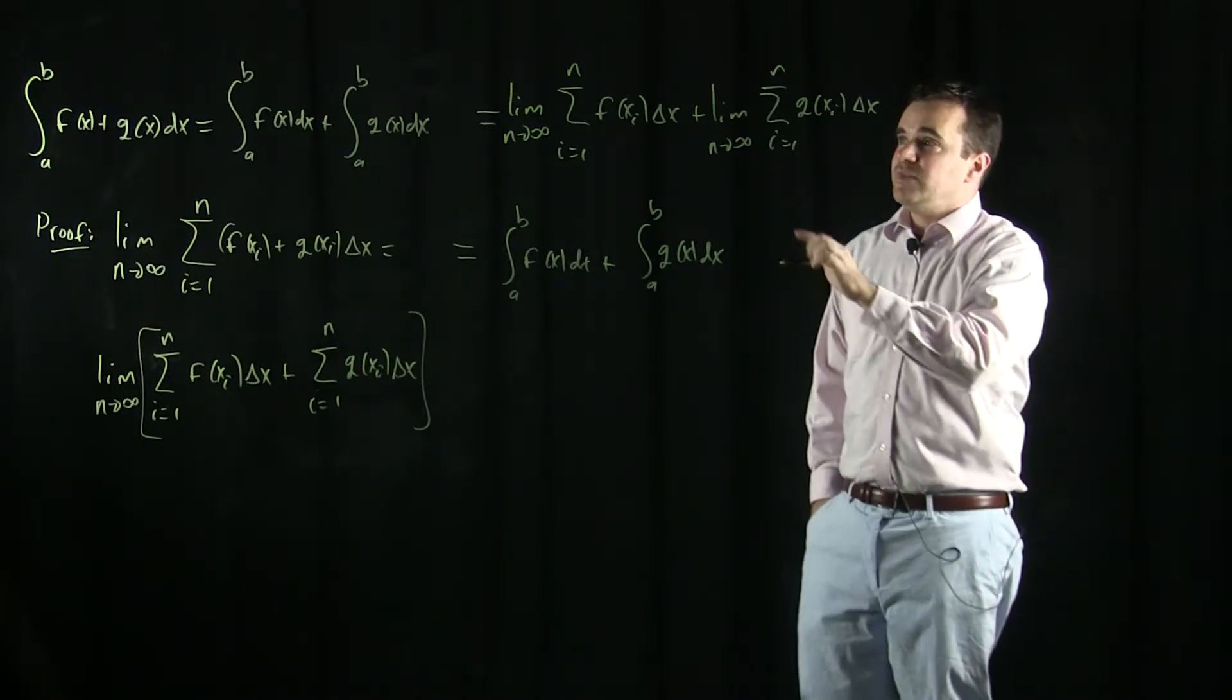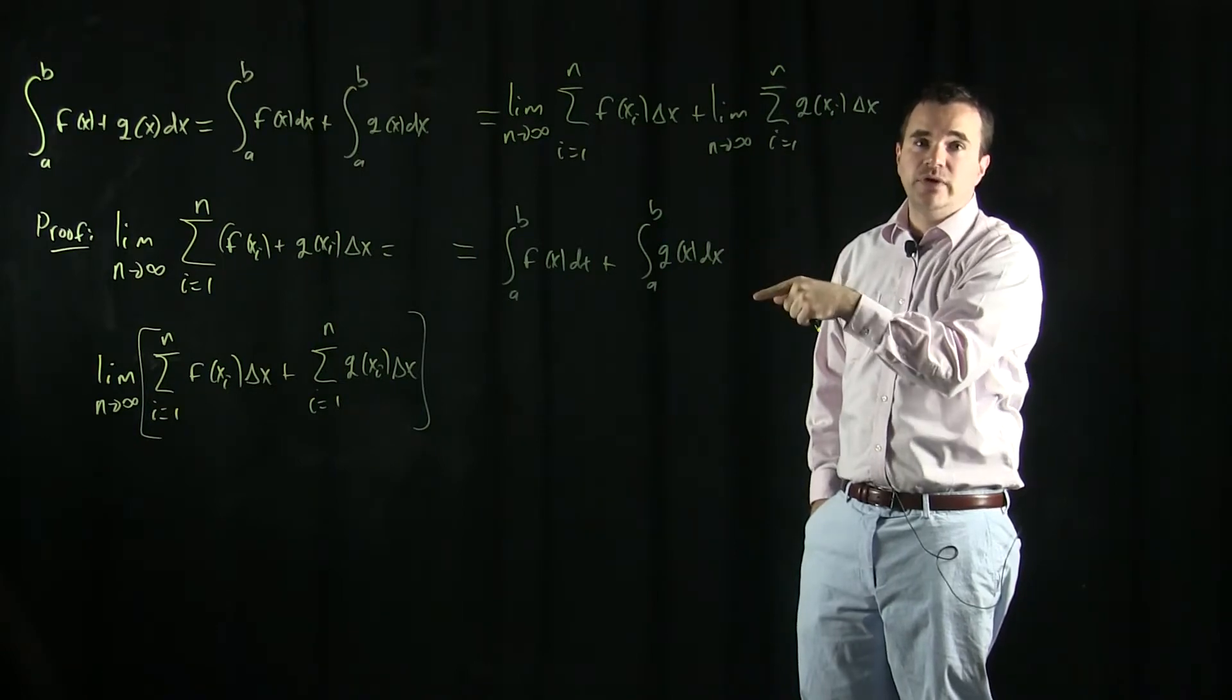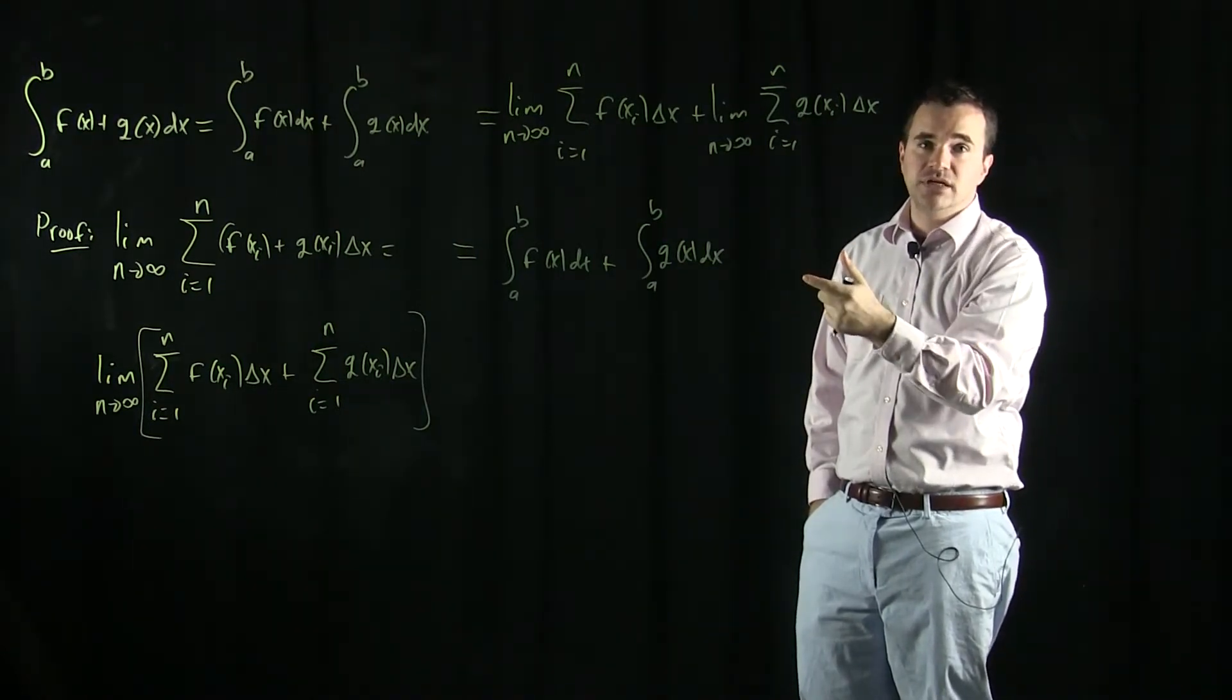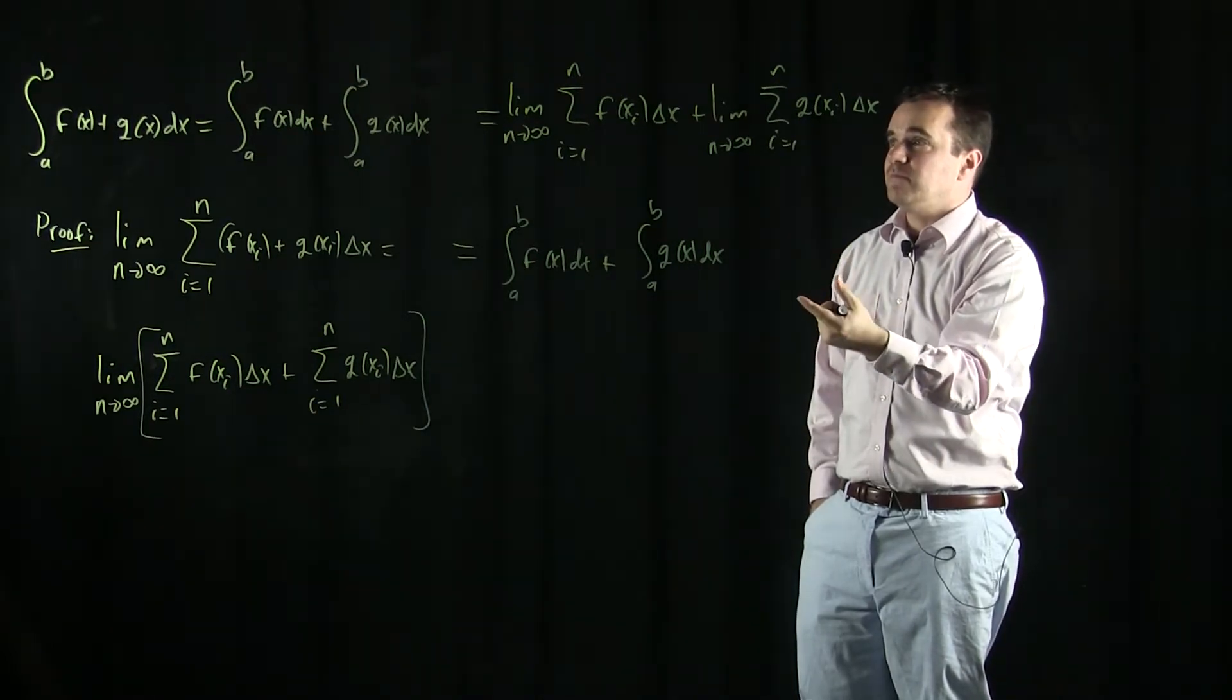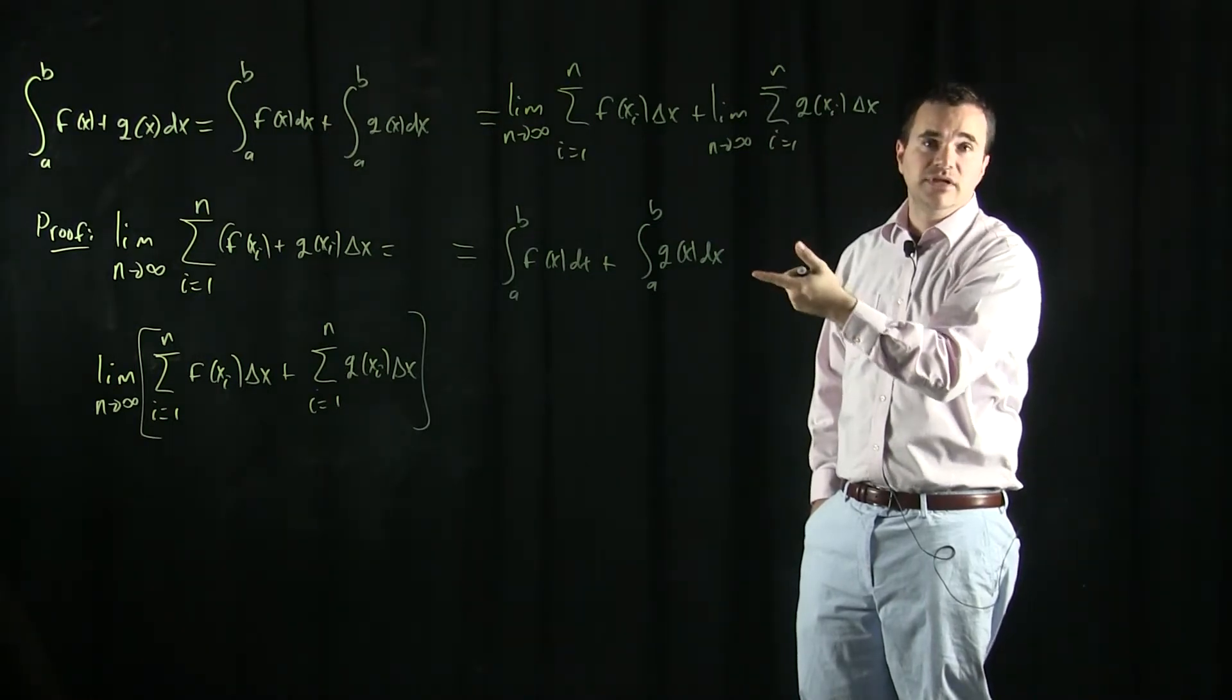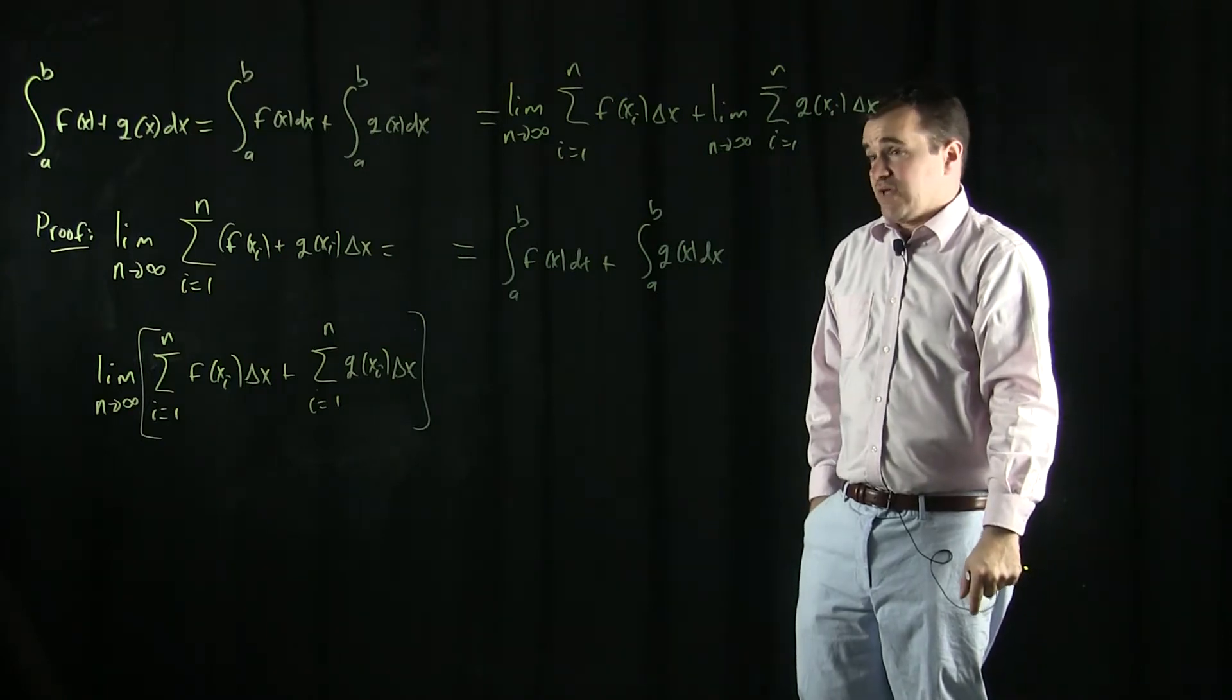So this rule, this linearity property, is only going to be true if you start out knowing that f and g are integrable. And if they are, then you can add up their integrals and it'll be equal to the sum. And so that's that rule.